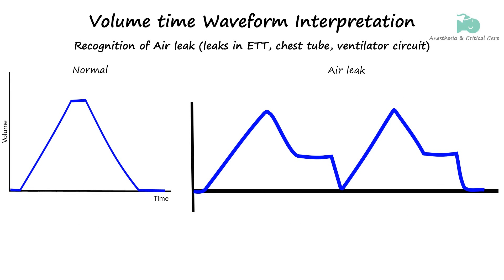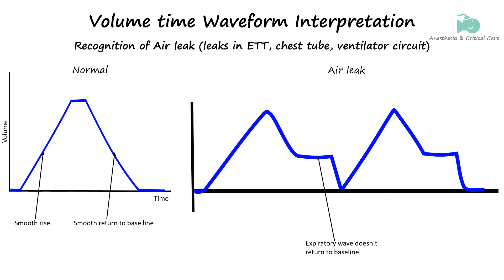An air leak in a volume-time waveform can be recognized by an abnormality in the expected pattern. Typically, in the absence of a leak, the waveform rises smoothly during inspiration, reaches a peak, and then returns to baseline during exhalation. However, when there is an air leak, the waveform will not return fully to baseline at the end of exhalation — instead, it plateaus above zero, indicating that the expected volume of air is not returning to the ventilator. The upward slope during inspiration may also be less steep, and the peak volume may be lower than expected because some air is escaping through the leak.